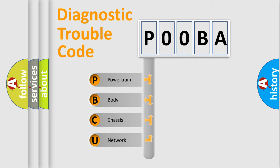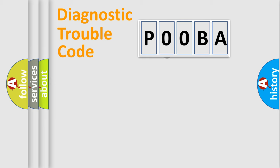We divide the electric system of automobile into four basic units: Powertrain, Body, Chassis, and Network. This distribution is defined in the first character code.